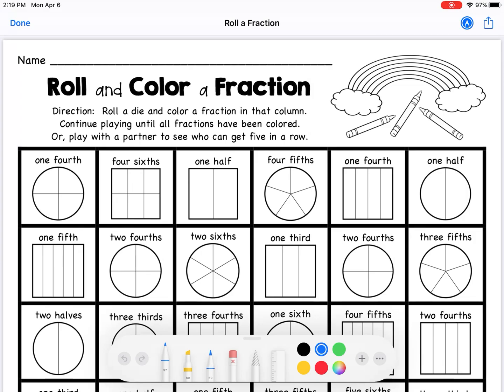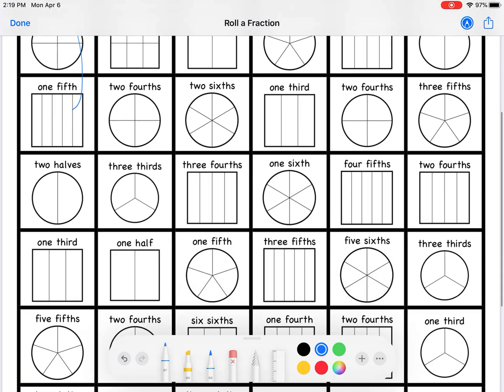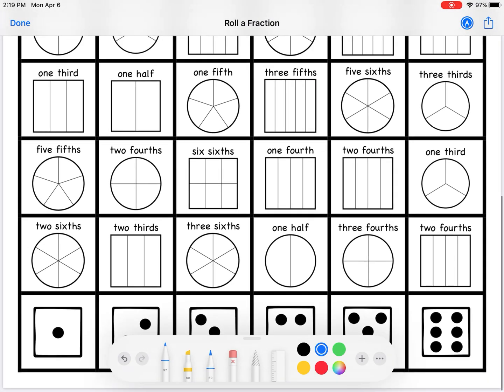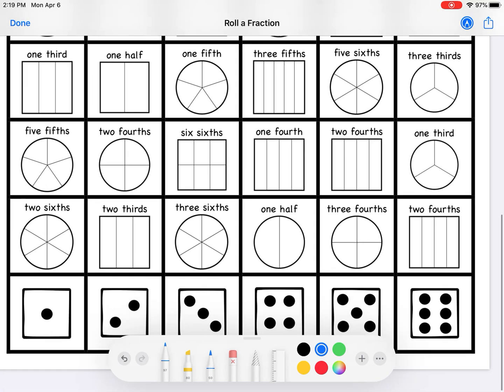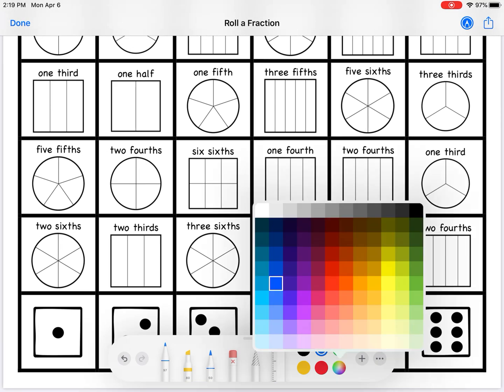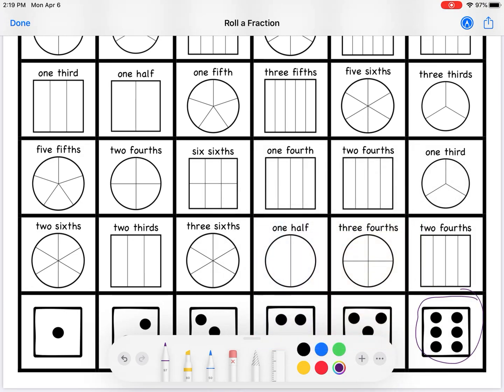When we roll a die we're gonna look for the columns that match that die. So let's say I rolled a six, so I would have to roll a fraction that's in this column right here. Let me just make this a little bit thicker.